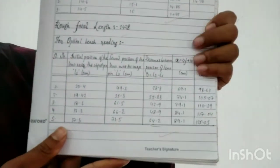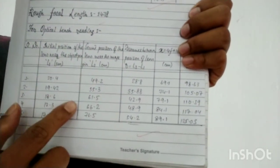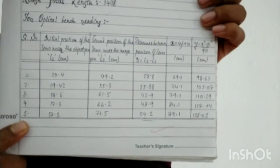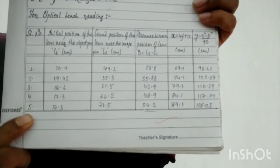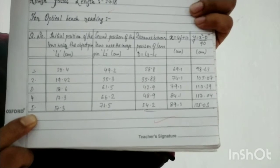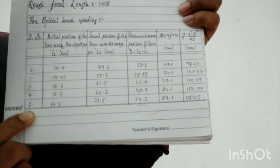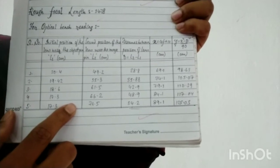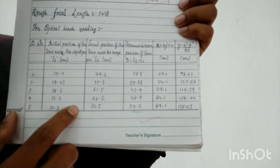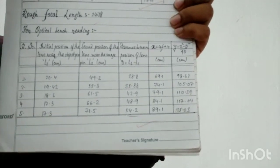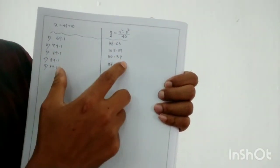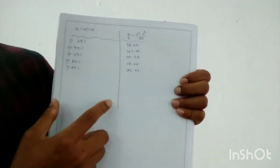After doing this experiment, I got the values which I have written in that table. You can copy it or take a screenshot. These are the values I found by doing the displacement method experiment. Separately I have written the values for x and y, which I am going to put on the graph.